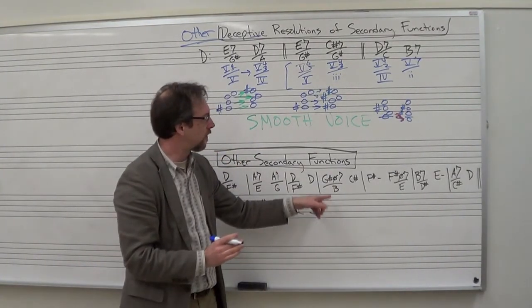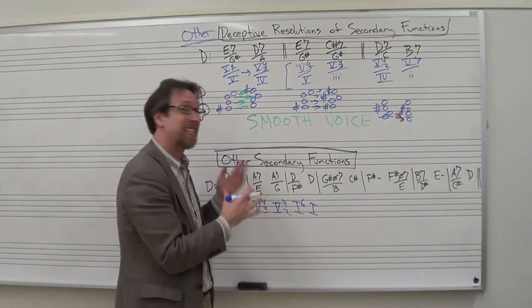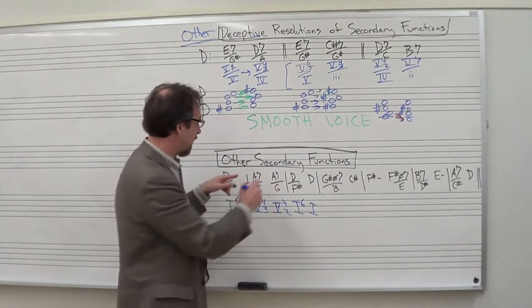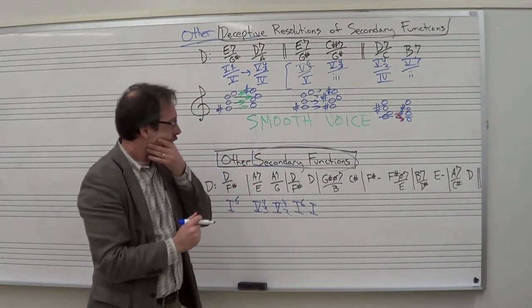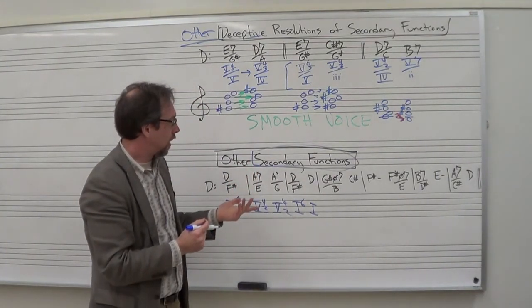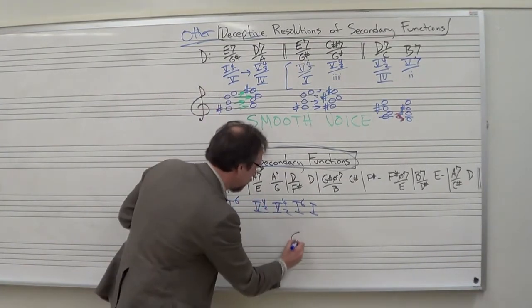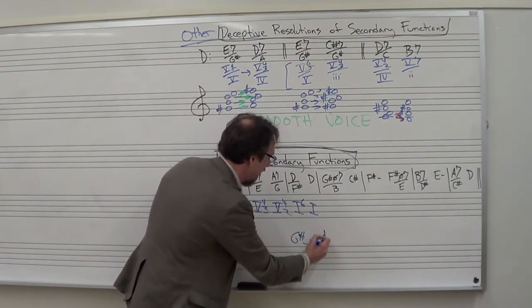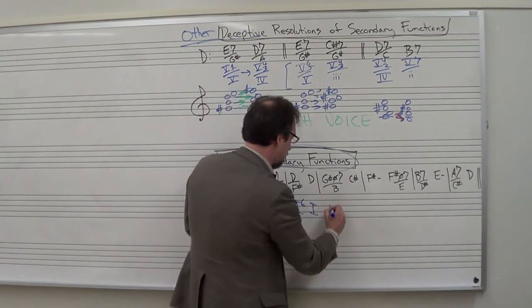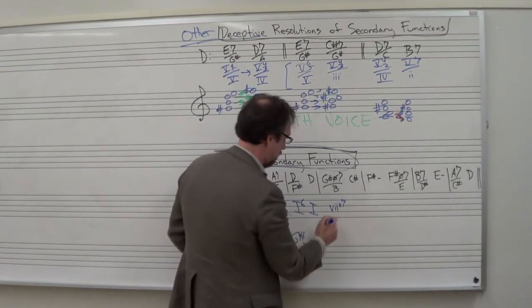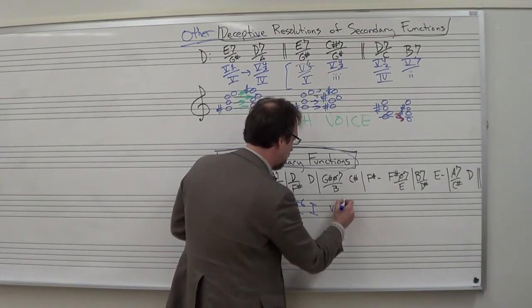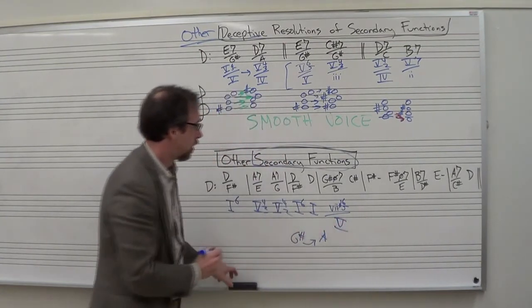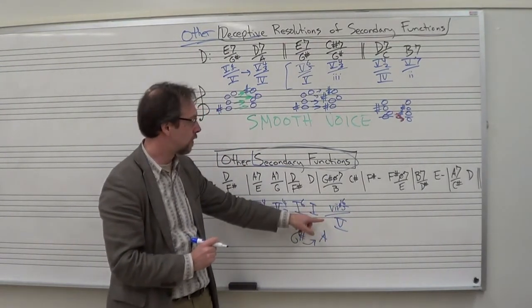Here we have G sharp half diminished 7 over B. This is our first chord that is not within the key of D major. So if we are analyzing this as secondary functions. Well, G sharp half diminished 7. G sharp. This would be our 7. Up a half step goes to A, right? So we could say 7 half diminished 7. Well, taking an inversion would be 6-5 of A would be 5. Right? 7 half diminished 6-5 of 5.